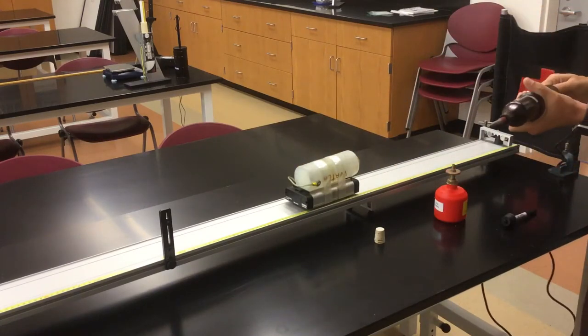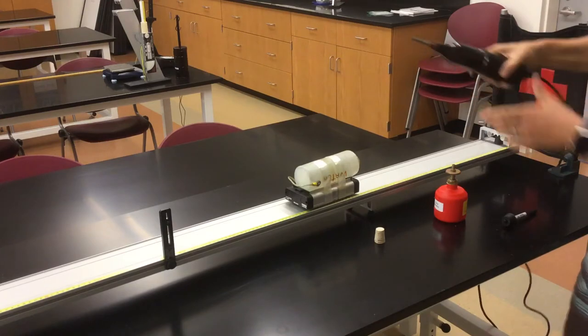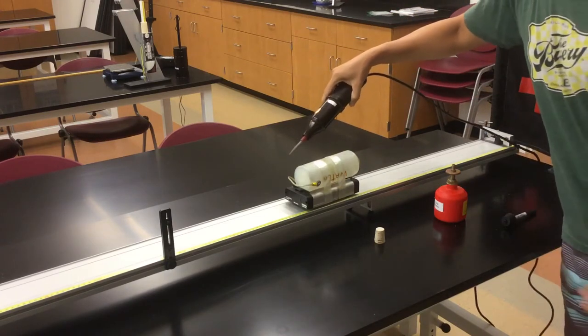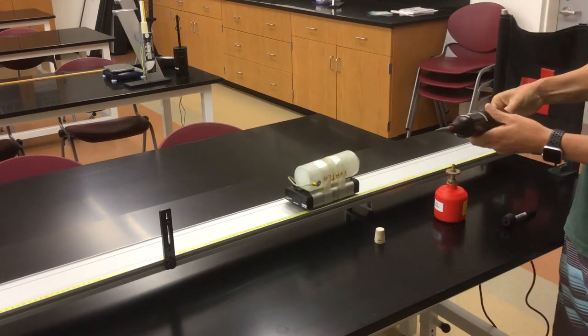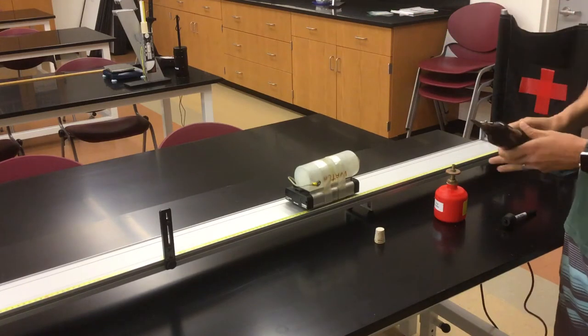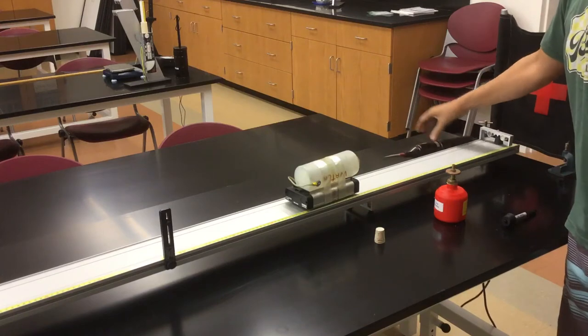Here's a little Tesla coil, a cattle prod if you will, and we're going to touch it to this bolt and it makes a little zap and that should give us all the ignition that we need.